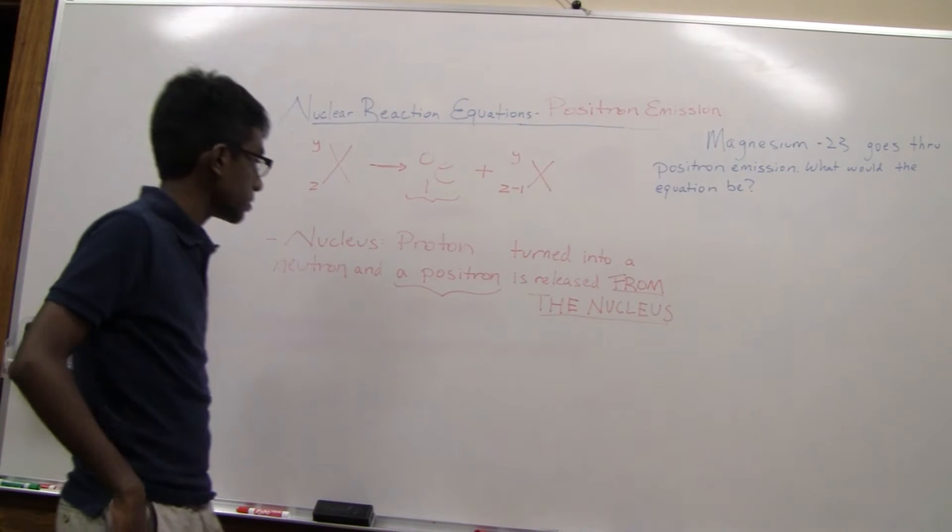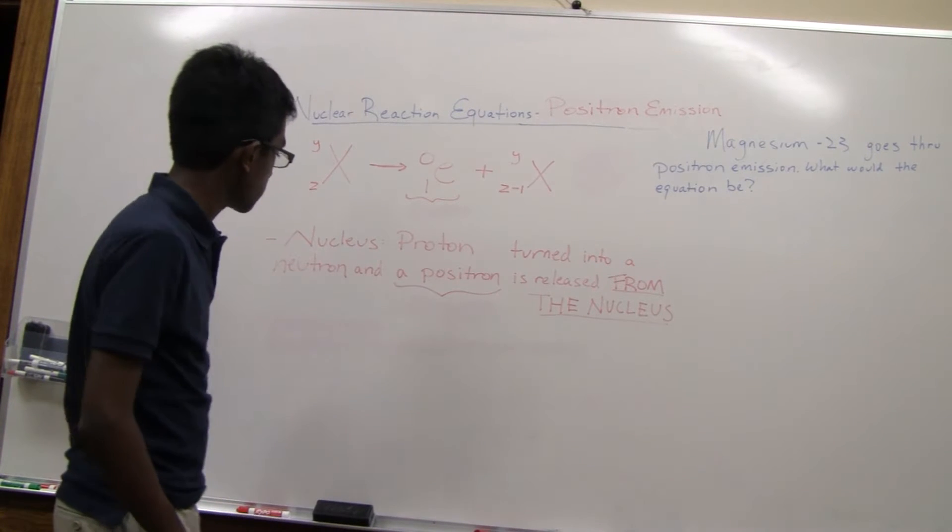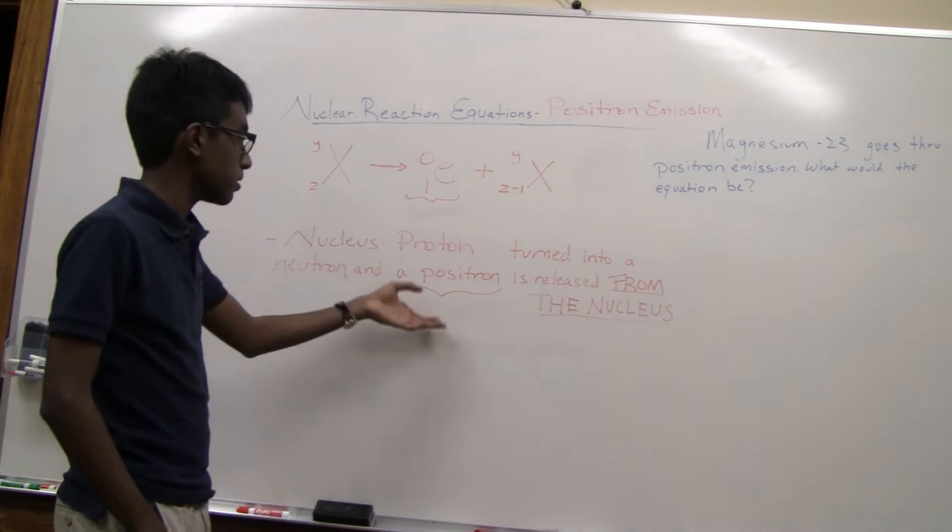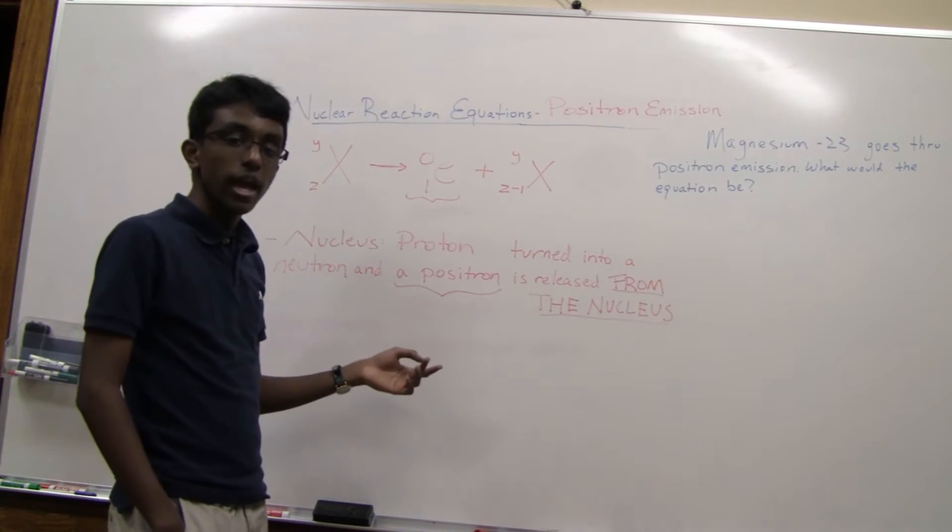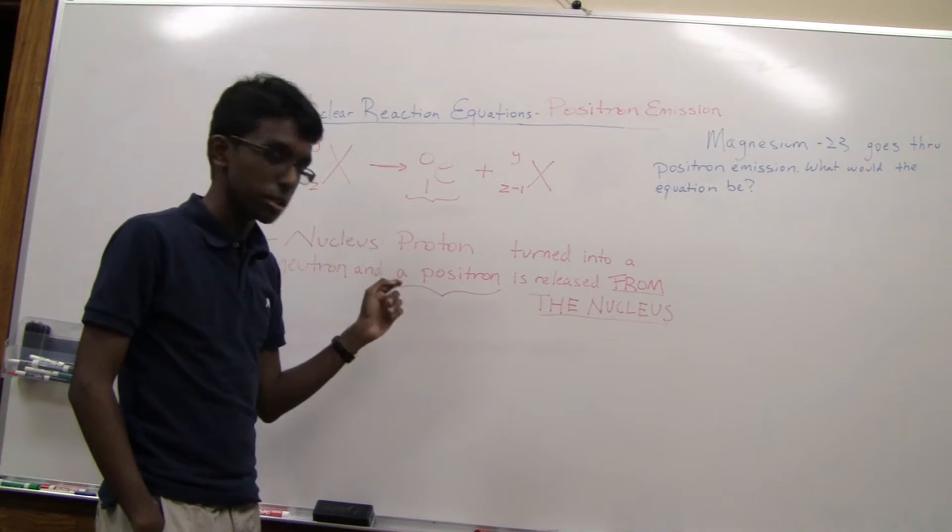So in positron emission, a proton in the nucleus is going to be turned into a neutron and a positron.